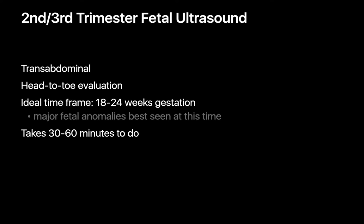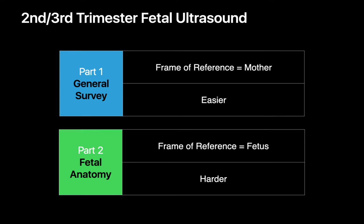Second and third trimester fetal ultrasounds are performed transabdominally and involve a head-to-toe evaluation of the fetus. The ideal time frame is between 18 and 24 weeks gestation, since this is when major fetal anomalies are most easily visualized. These studies usually take between 30 and 60 minutes and can be divided into two halves: a general survey and a detailed assessment of fetal anatomy.